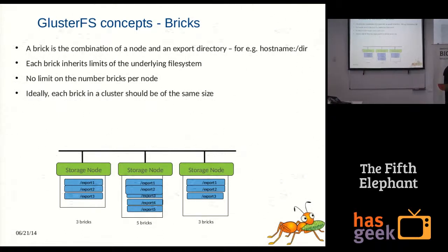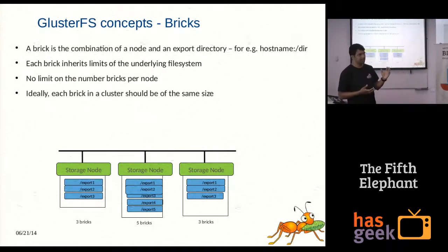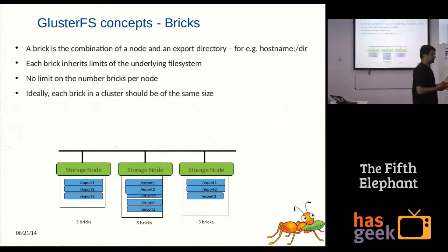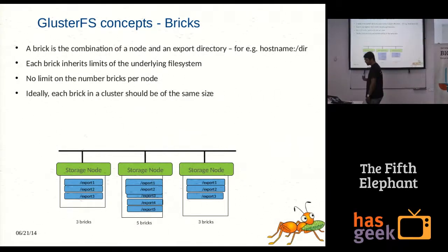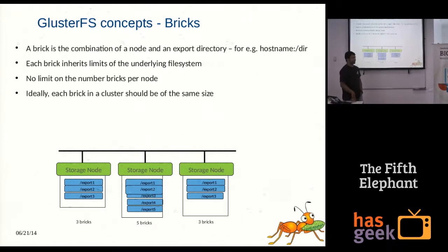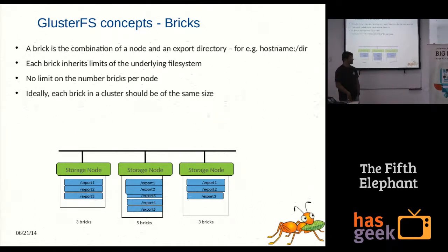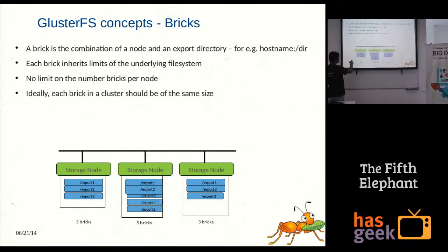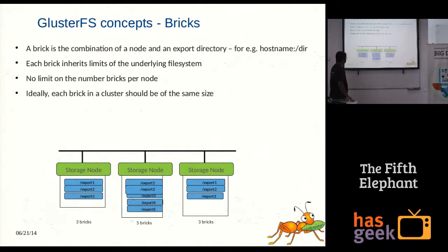If one file system does not support a certain data size, when you write data to GlusterFS and it finally goes to disk, if the limit is exceeded, it will fail. You need to be aware of the limitations of the underlying file system. Ideally, we recommend each brick in GlusterFS be of the same size, because files are distributed to get better utilization. If all bricks are the same size, utilization is definitely better. In the example shown here, there are three storage nodes — the first has three bricks, the second has five bricks, and the third has three bricks.